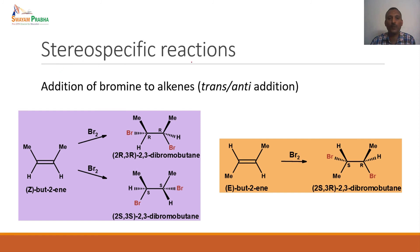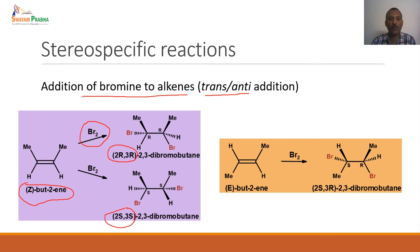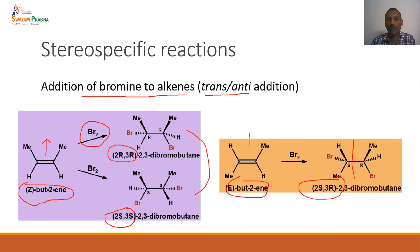Another example of a stereospecific reaction is the addition of bromine to alkenes — a trans (anti) addition. Starting with the Z-isomer, bromine addition gives either the 2R,3R or the 2S,3S isomer — enantiomeric products. Starting from the E-isomer, we end up with a meso compound, where one half of the molecule is the mirror image of the other half. So the Z-isomer gives a pair of enantiomers, while the E-isomer gives only the meso product — this is a stereospecific reaction: one starting material gives one set of products, the other gives an entirely different set.